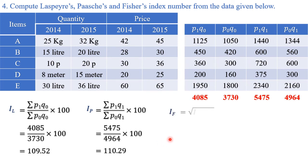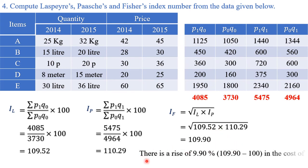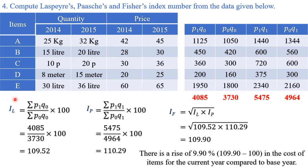Fisher's index number = √(Laspeyres' × Paasche's) = √(109.52 × 110.29) = 109.90. Statement: there is a rise of 9.90% (i.e., 109.90 − 100) in the cost of items for the current year compared to the base year.